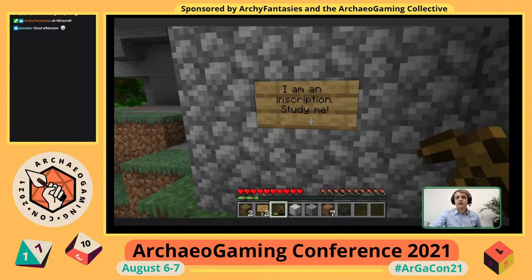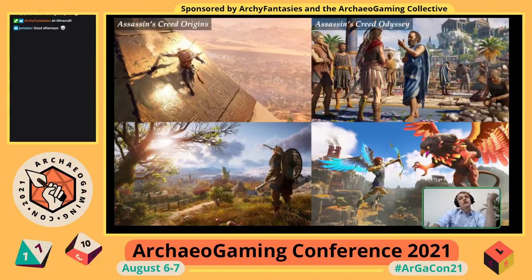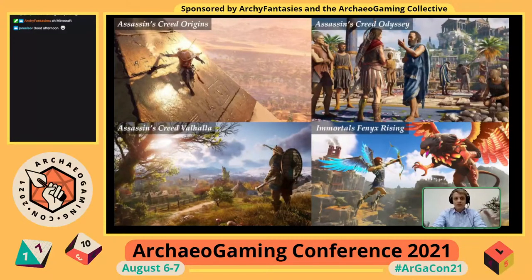In this presentation I will focus not on the player but on the developer side of the game medium, and look at actual historical inscriptions included in video games. We'll focus on ancient Latin and Greek inscriptions in recent Ubisoft games — specifically Assassin's Creed Origins, Assassin's Creed Odyssey, Assassin's Creed Valhalla, and Immortals Fenix Rising — all games that engage with the ancient world, either explicitly or more implicitly.